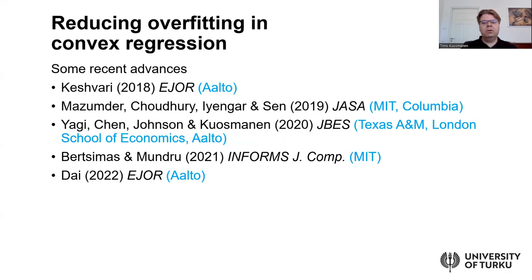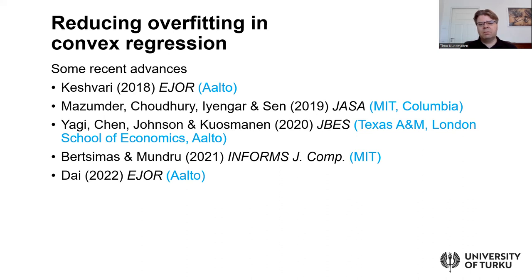Let's now move to the new developments. I have cited a couple of recent papers in the literature on convex regression that focus particularly on the question of how to reduce overfitting. This question has caught interest in the statistics literature and also to some extent in machine learning. I also want to point out that we have colleagues from MIT and Columbia University who have published in top journals such as JASA. So it's not just some fringe developments — Finnish researchers are not alone in doing this kind of work nowadays.